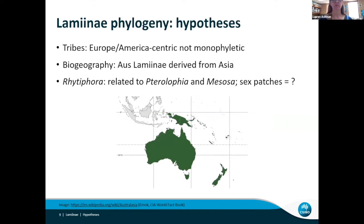We had three hypotheses for this project. First, that the tribes present in Australia but with their type genus from Europe or America would not be monophyletic — that distribution seems too broad to be realistic. Secondly, based on the relative diversity of Lamiinae and Cerambycinae in Australia, we expected that the Lamines would be more recently derived from Asia, as opposed to having a Gondwanan origin. And finally, for Rhytifera, we expected it to be closely related to Terilofia and Mesosa, and that at least a few Asian genera would share the sex patch trait.